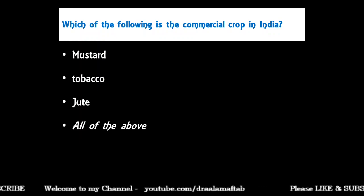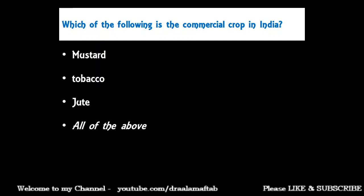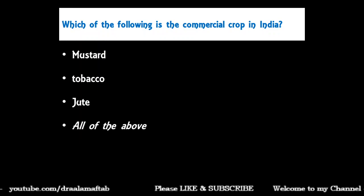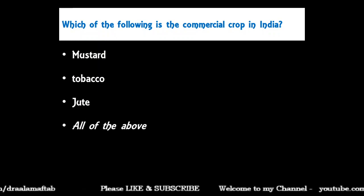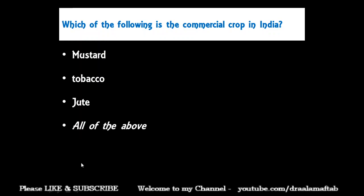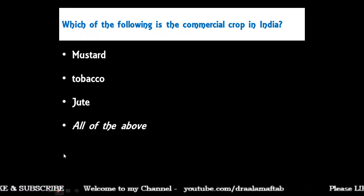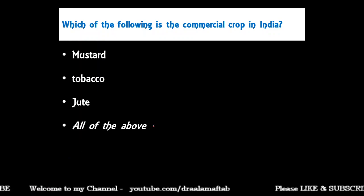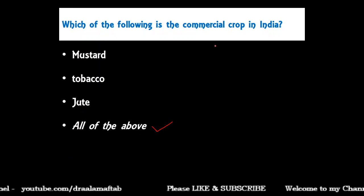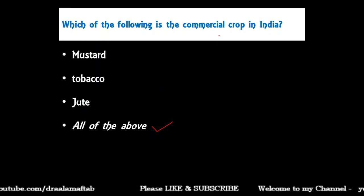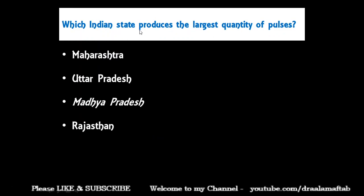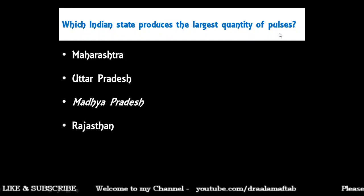The first question: which of the following is the commercial crop in India? Mustard, tobacco, jute — the correct answer is all of the above. Mustard, tobacco, and jute — all three are commercial crops in India.